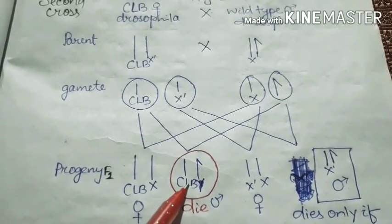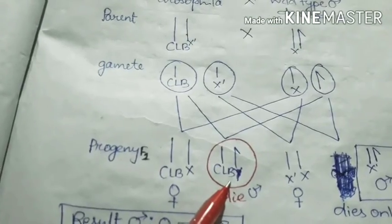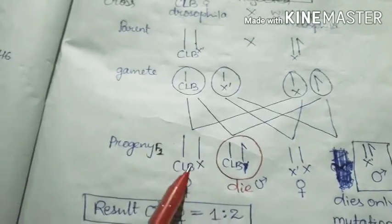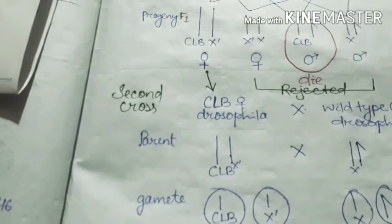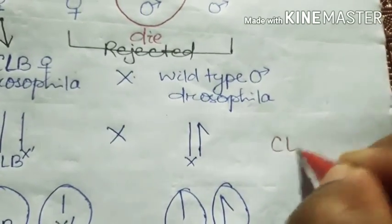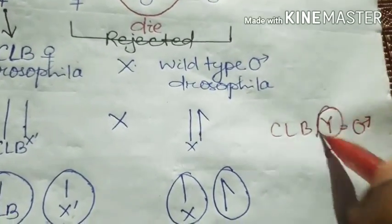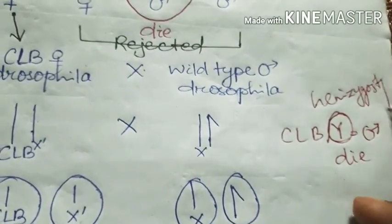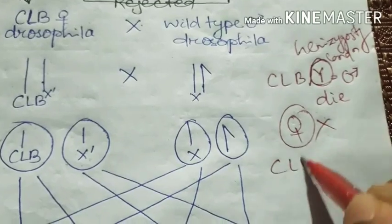So if the result is CLB and Y, the CLB male died because of hemizygosity for the lethal allele. It's the lethal allele producing hemizygosity. This is not homozygous, this is the hemizygosity condition. But females are not died in the second cross and not in the first cross. Females are alive but males died.